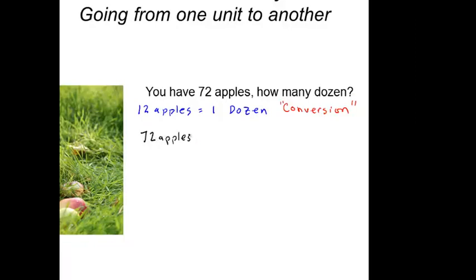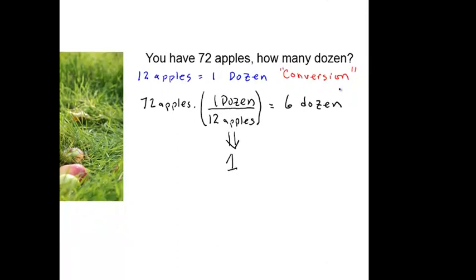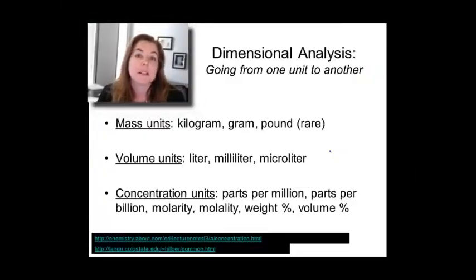You take 72 apples, and you want to multiply it by a number that doesn't actually change its value, but it changes the units. It's going to be the conversion written as a fraction with 12 apples on the bottom and one dozen on top. Since 12 apples equals one dozen, this whole thing equals one. When you multiply this out, you're multiplying 72 apples by one. You get six dozen. We knew to put apples on the bottom because you cancel the units. If it appears on top and bottom, they go away, and you're left with a dozen.